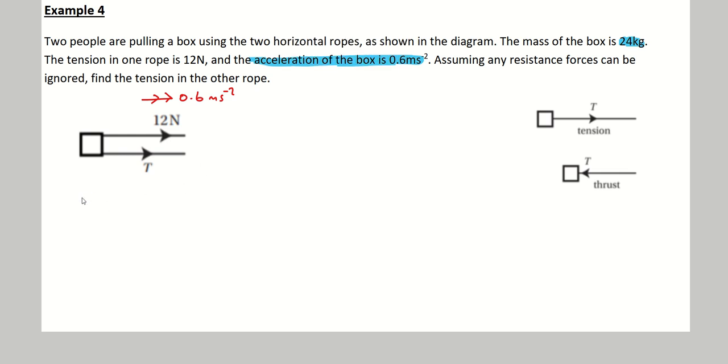So what I'm going to do is write F equals mA, and we're going to do something called resolving, which means you look at all the forces in the direction of its motion, in the direction which it's accelerating, which is 0.6, so to the right. So I'm going to write resolve, or you can just write an R, which we'll be doing later on. I'm going to write resolve and the direction I'm resolving in, which is to the right.